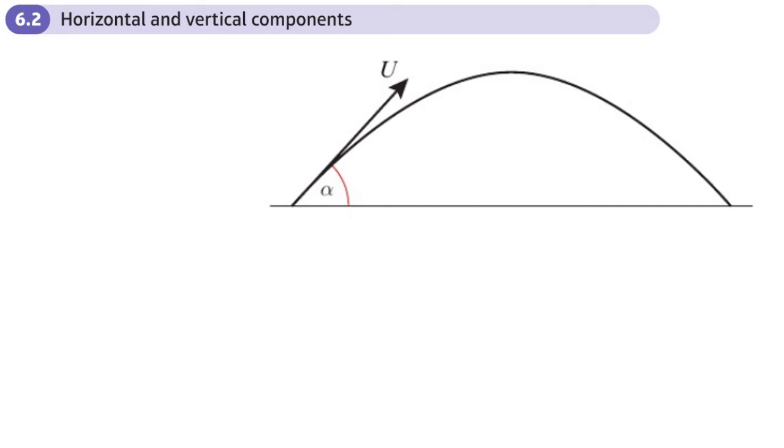This is section 6.2 of the projectiles chapter 6 in the statistics and mechanics year 2 book and now we're going to be looking at where we consider the horizontal and vertical components of projection.